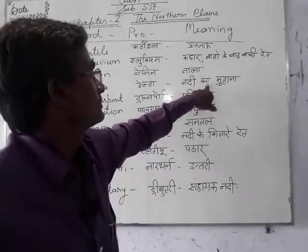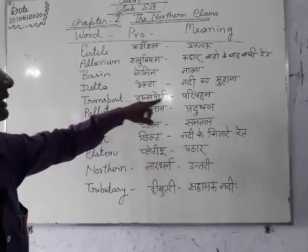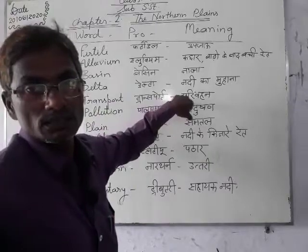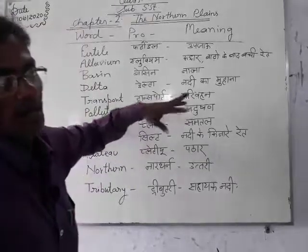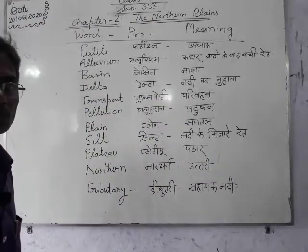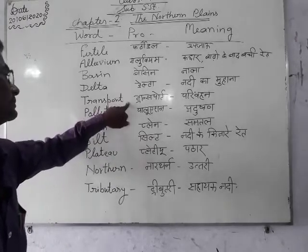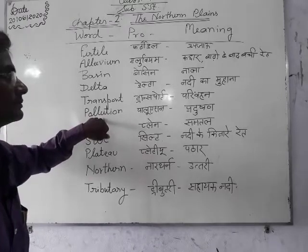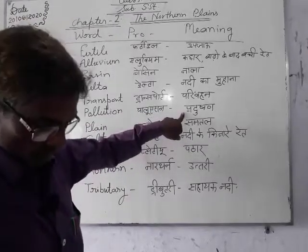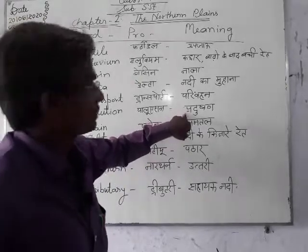Transport — परिवहन, जिससे माल और आदमी का आवागमन होता है, आता है जाता है. Pollution — कोई भी चीज़ प्रदूषित हो जाती है, नुकसानदायक हो जाता है.